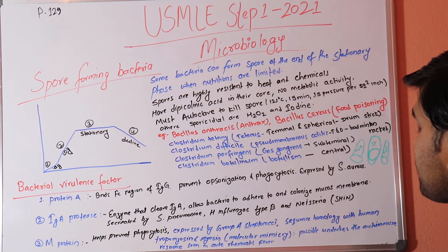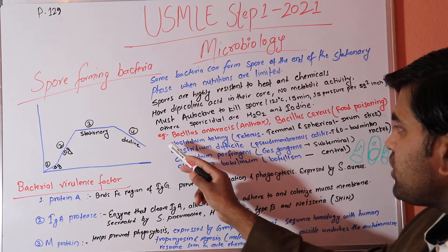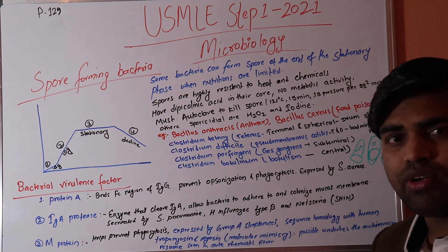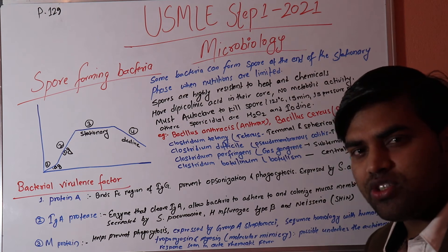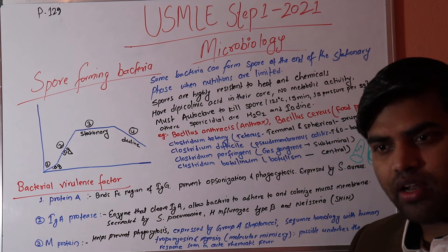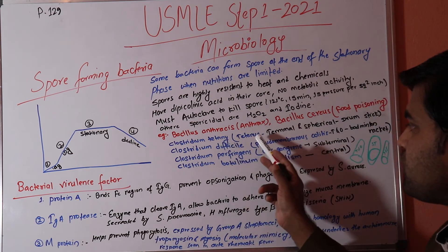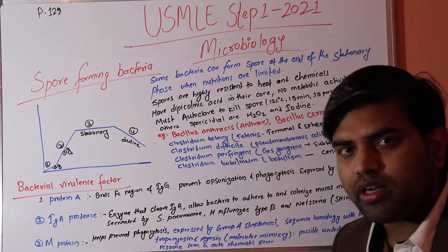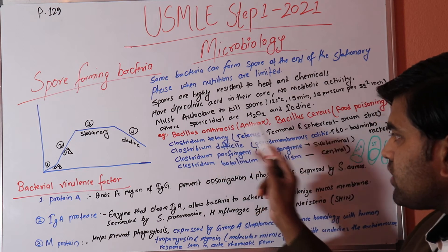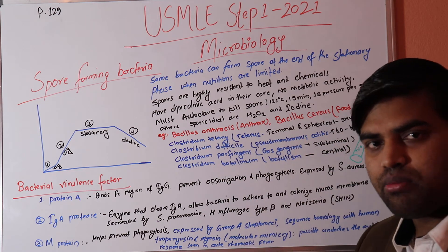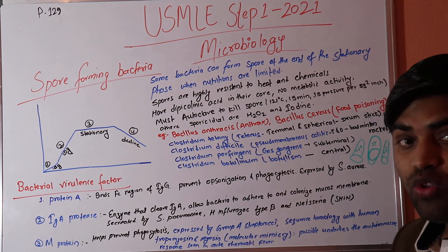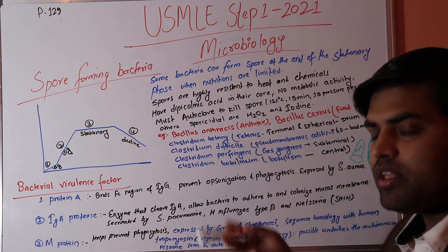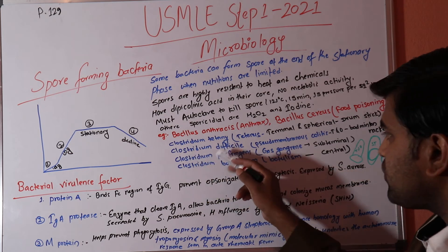Bacillus cereus causes food poisoning. Clostridium tetani causes tetanus — a major disease before vaccination. Clostridium tetani spores are present in abundant amounts in soil. After a rusty nail wound, road traffic accident, or any wound infection, we administer a tetanus injection because these spores can enter wounds, germinate into bacteria, and cause tetanus, which can be fatal.